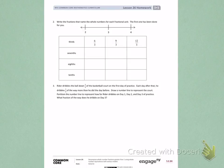This is Module 5, Lesson 26, Side 2. Number 2. Write the fractions that name the whole numbers for each fractional unit. The first one has been done for you.